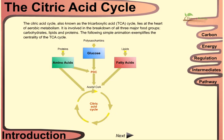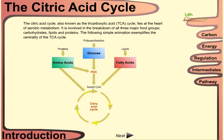Hello friends. In this video we will be talking about the citric acid cycle — the energy consumption, importance, and regulation of this cycle, as well as its intermediates and pathways. The citric acid cycle, also known as the tricarboxylic acid cycle or TCA cycle, lies at the heart of aerobic metabolism. It is involved in the breakdown of all three major groups of foods: carbohydrates, lipids, and proteins.